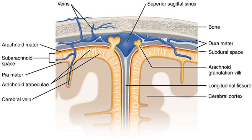The pia mater is a very delicate membrane. It is the meningeal envelope that firmly adheres to the surface of the brain and spinal cord, following all of the brain's contours. It is a very thin membrane composed of fibrous tissue covered on its outer surface by a sheet of flat cells thought to be impermeable to fluid. The pia mater is pierced by blood vessels to the brain and spinal cord, and its capillaries nourish the brain.